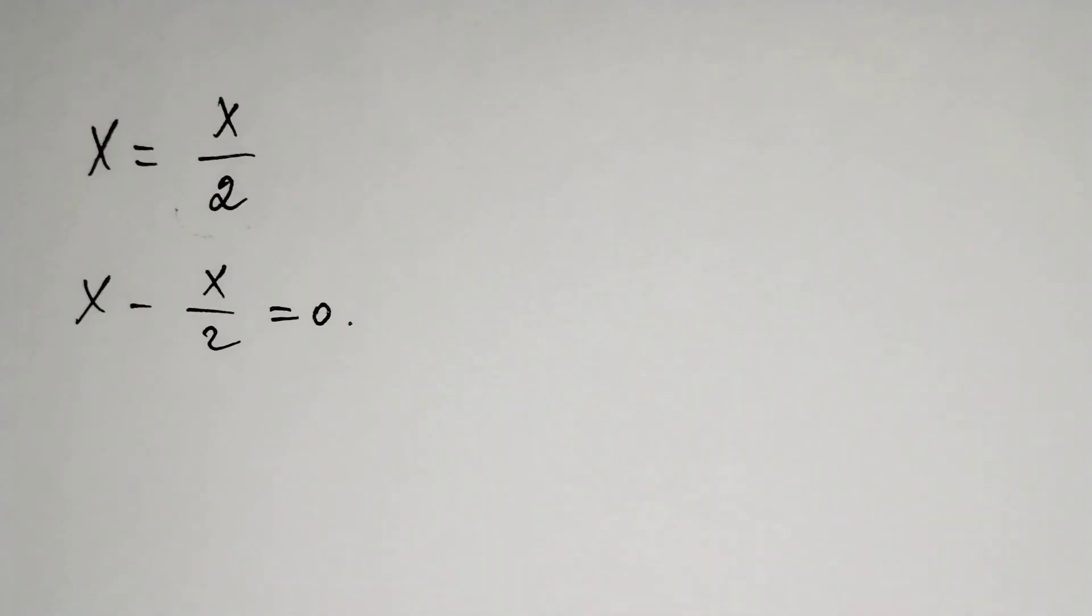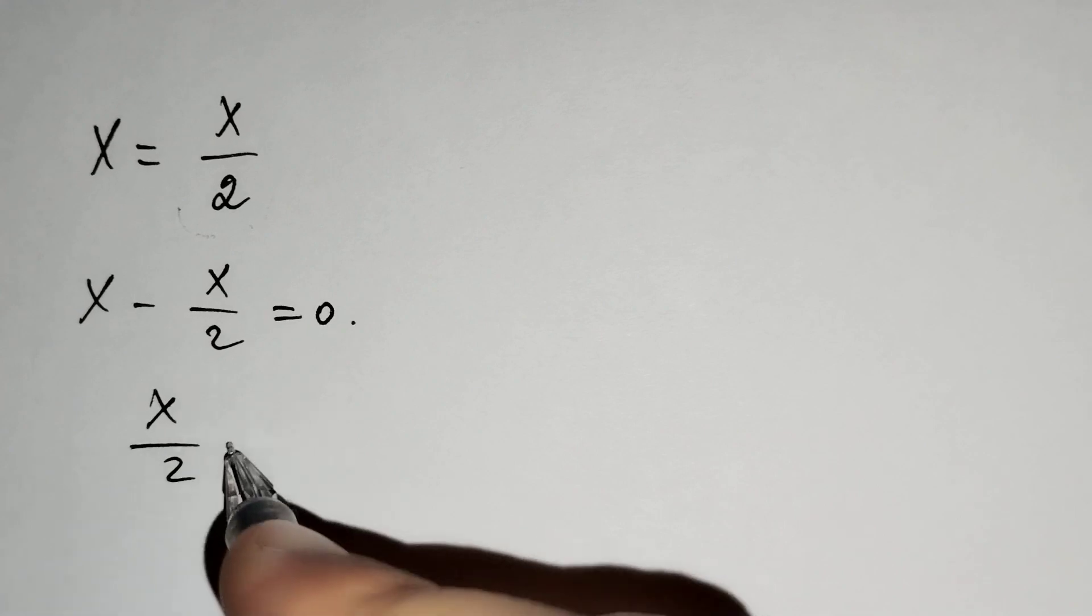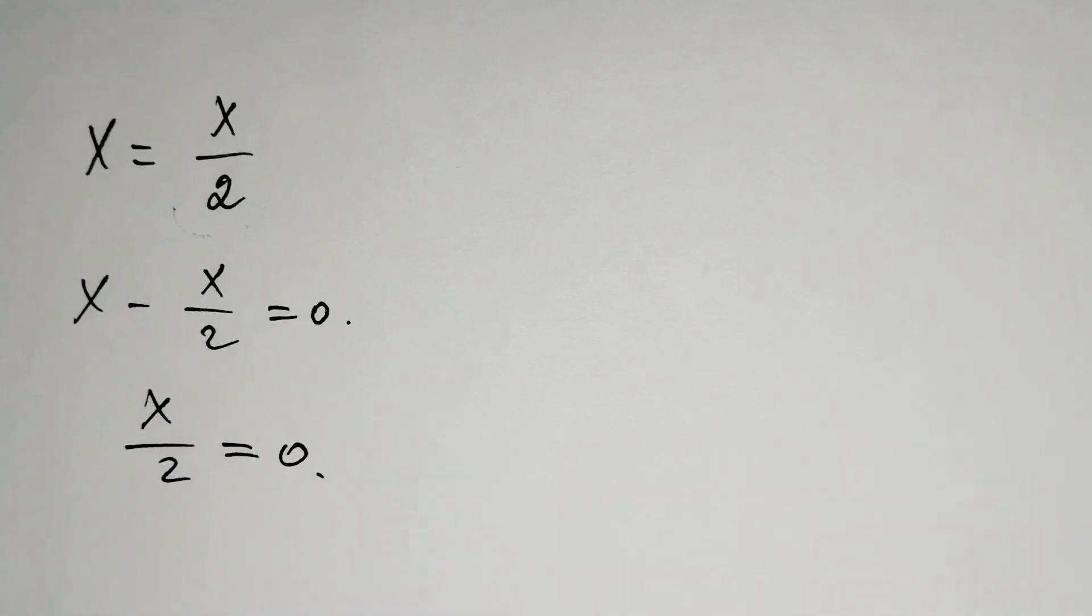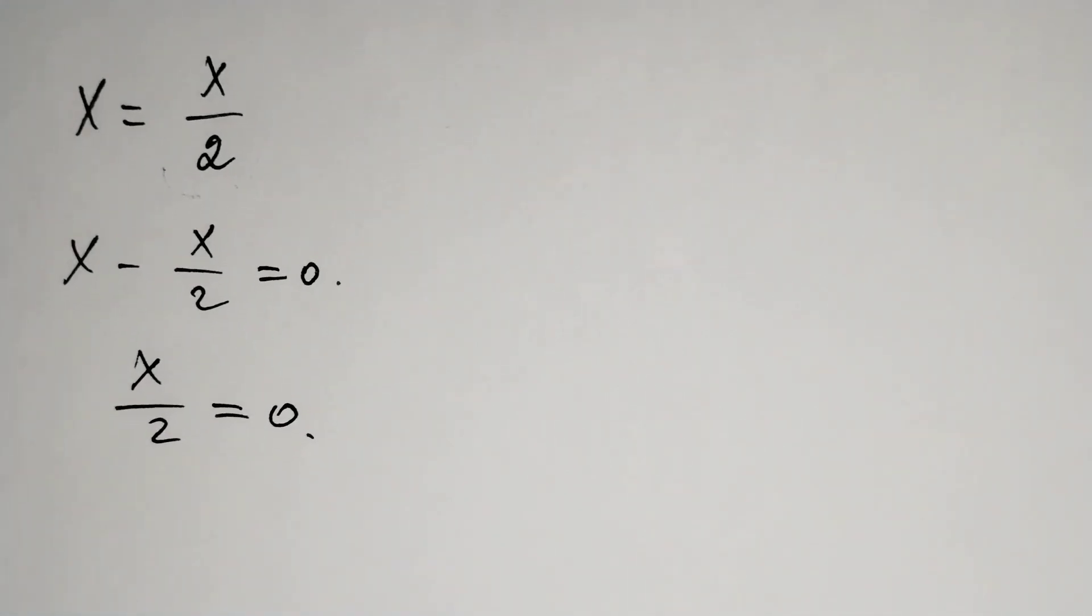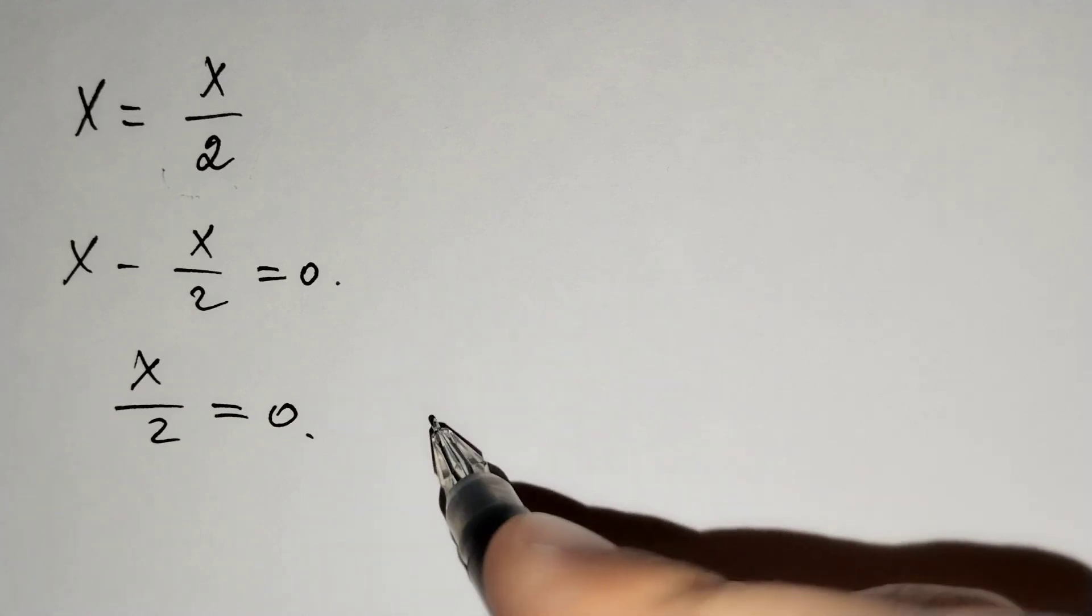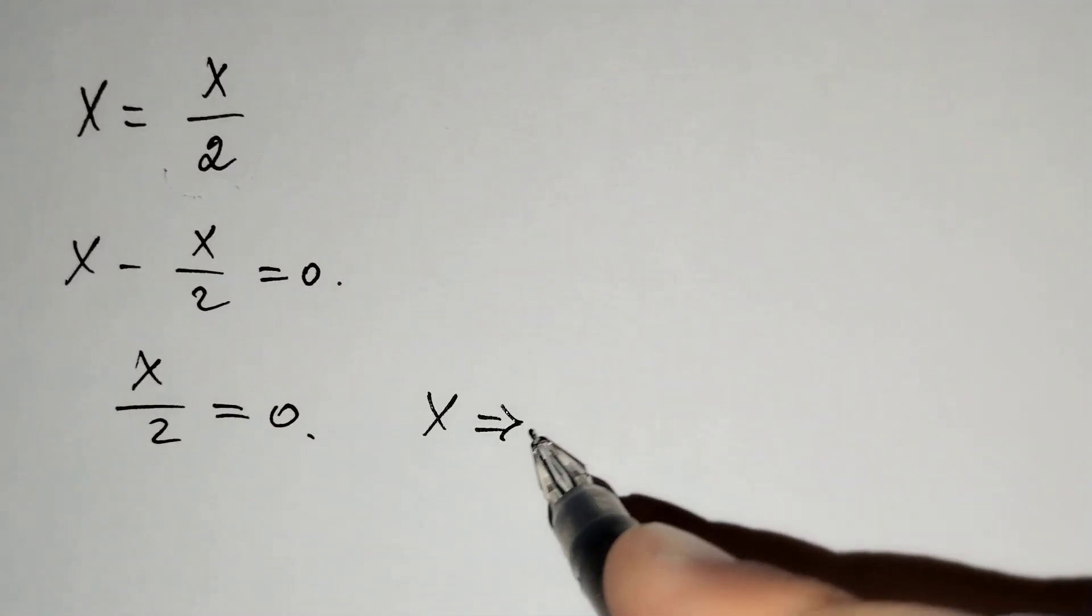And x minus x over 2 equals x over 2 equals 0. For the true equation, we know that x should equal to 0.